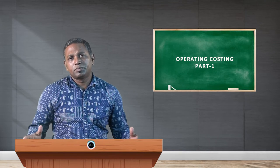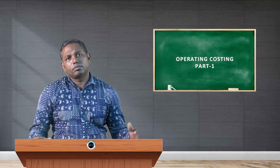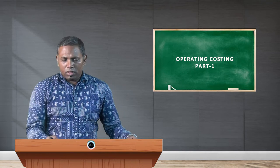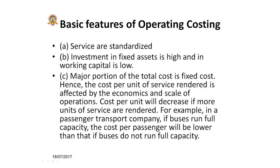Now let's understand the basic features of operating costing. There are three important basic features. Number one: services are standardized. If you take transportation like airways, roadways, or railways, the services provided are standardized.